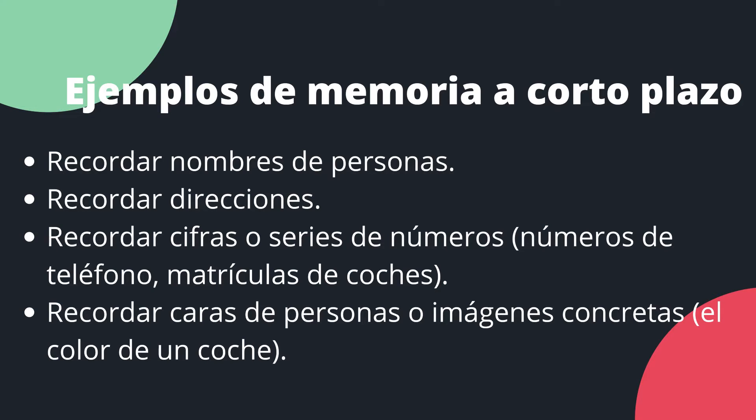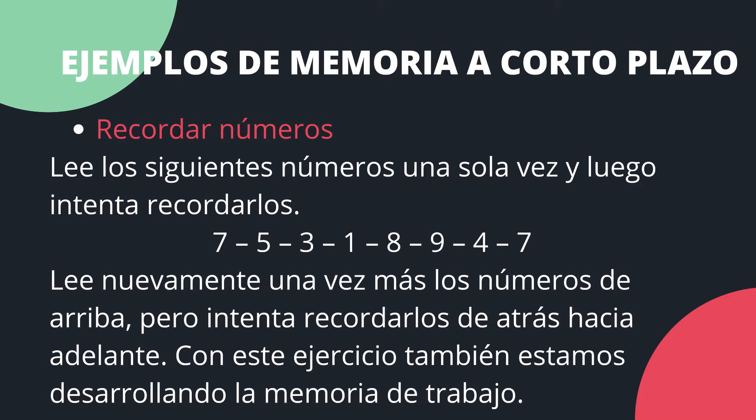Ejemplos de memoria a corto plazo serían: recordar nombres de personas, recordar direcciones, recordar cifras o series de números, números de teléfono, matrículas de coches, recordar caras de personas o imágenes concretas — por ejemplo, el color de un coche.